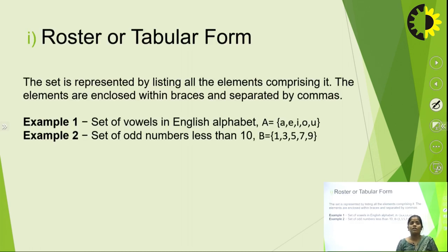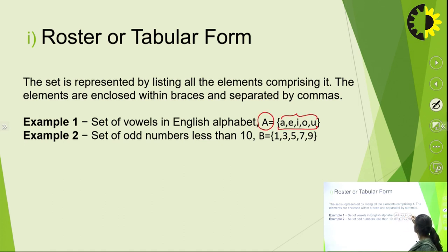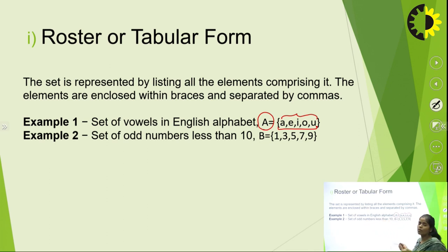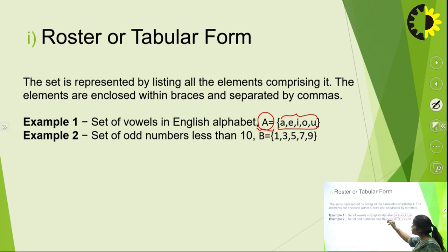Roster or tabular form means the set is represented by listing all elements comprising it, enclosed in curly braces with a capital letter. The elements are enclosed with brackets and separated by commas. For example, the set of vowels in the English alphabet — A, E, I, O, U — can be represented as set A = {A, E, I, O, U}. This is the roster or tabular form.